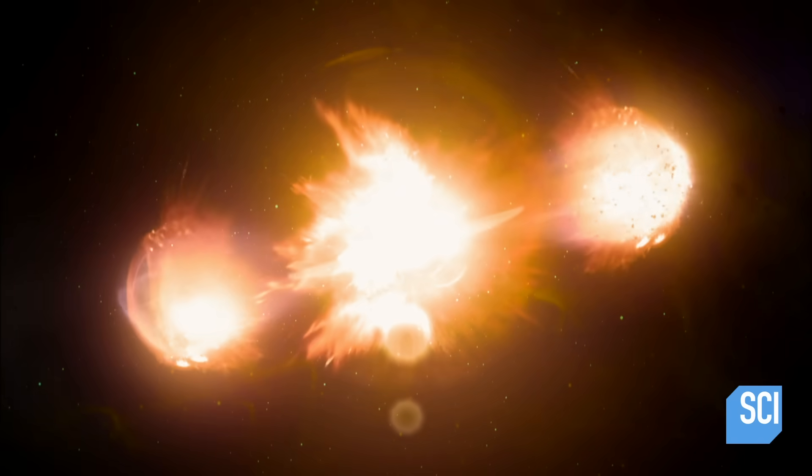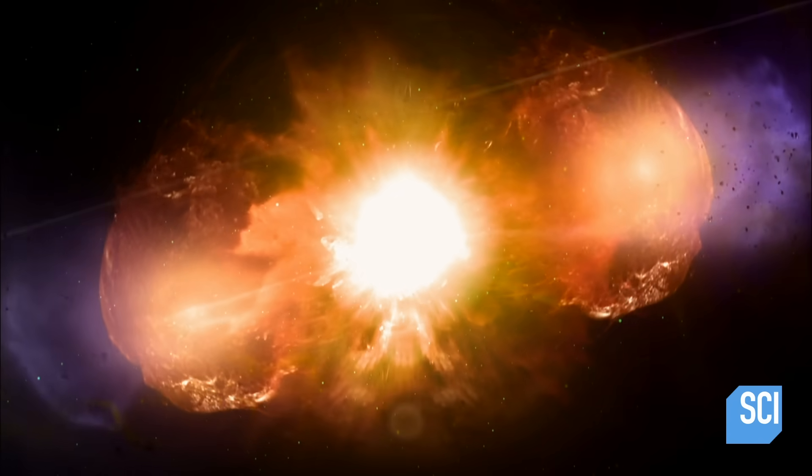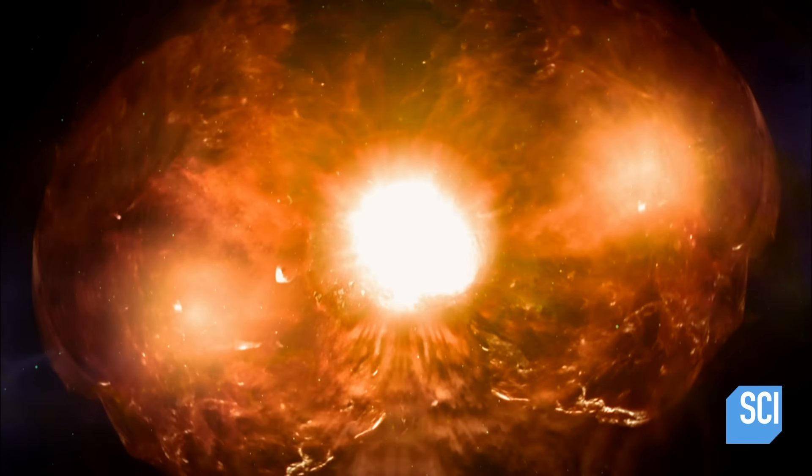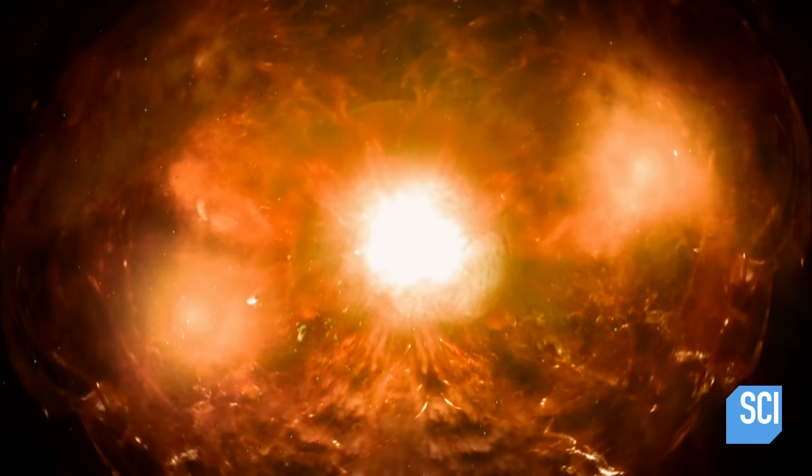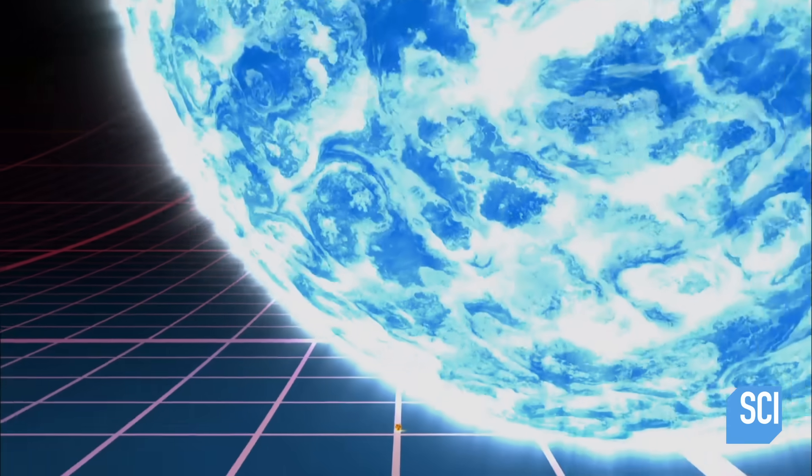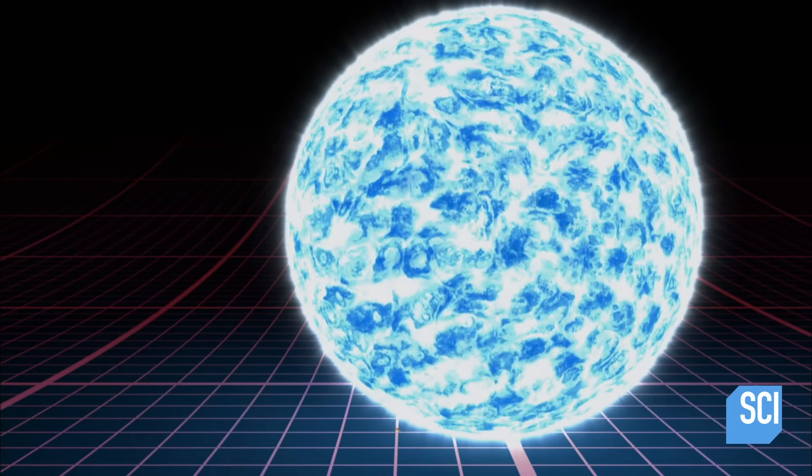Supernovas are a big, giant, dramatic end to a star's life. All stars die, but only the biggest go out with a bang. For a star to go supernova, we think it has to be at least eight times more massive than our sun. It's so easy to think of our sun as incredibly gigantic, but our sun is absolutely tiny compared to some of the giant stars in the sky.